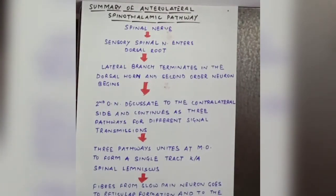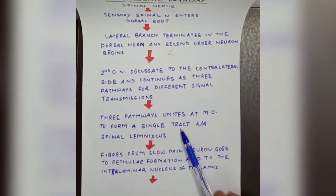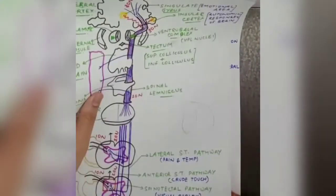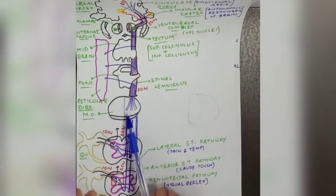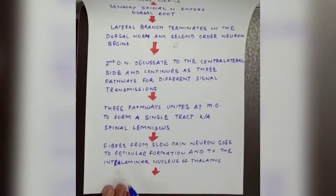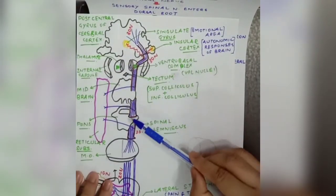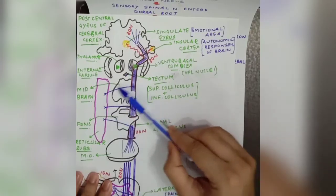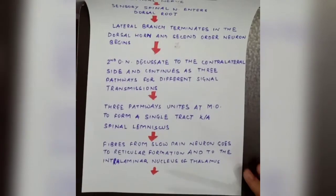The three pathways unite at the medulla oblongata to form a single tract known as the spinal lemniscus. Fibers from the slow pain neurons send branches to the reticular formation and the intralaminar nuclei of the thalamus, which are responsible for the alertness of the brain — signaling that tissues are damaged.